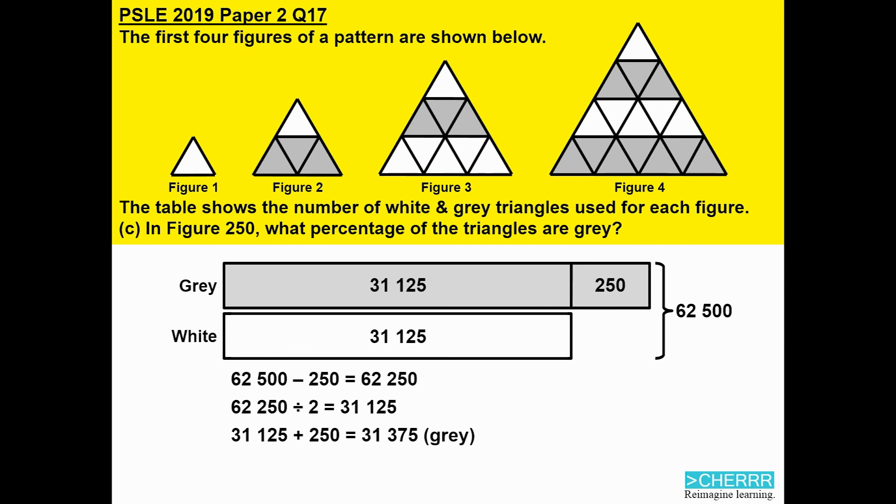To work out the percentage of the triangles that are grey, we need the fraction of grey triangles and multiply by 100 percent. That will be 31,375 out of 62,500 multiplied by 100 percent. And that will get us 50.2 percent.